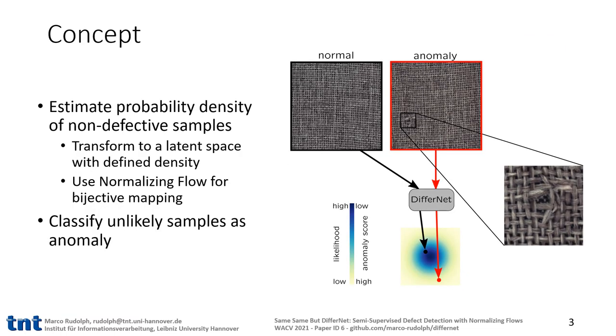Here comes our approach DifferNet. It estimates the probability density of non-defective samples by transforming them to a latent space with a defined density. Now the assumption is that a low likelihood is an indicator for a defect, or to be more general, an anomaly.